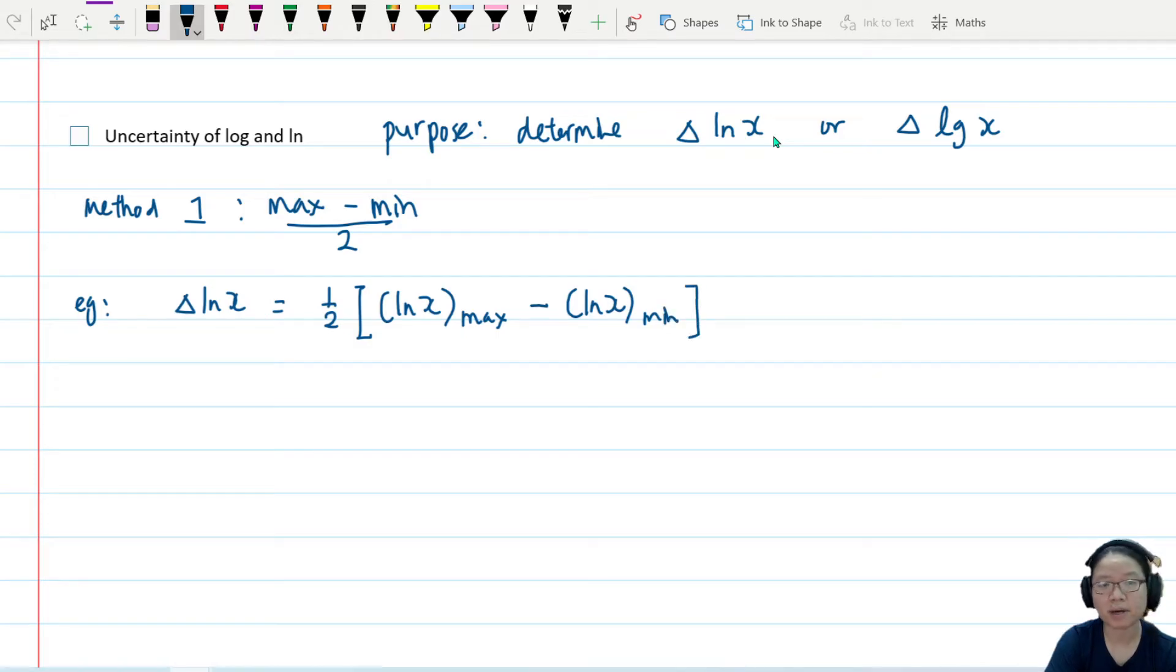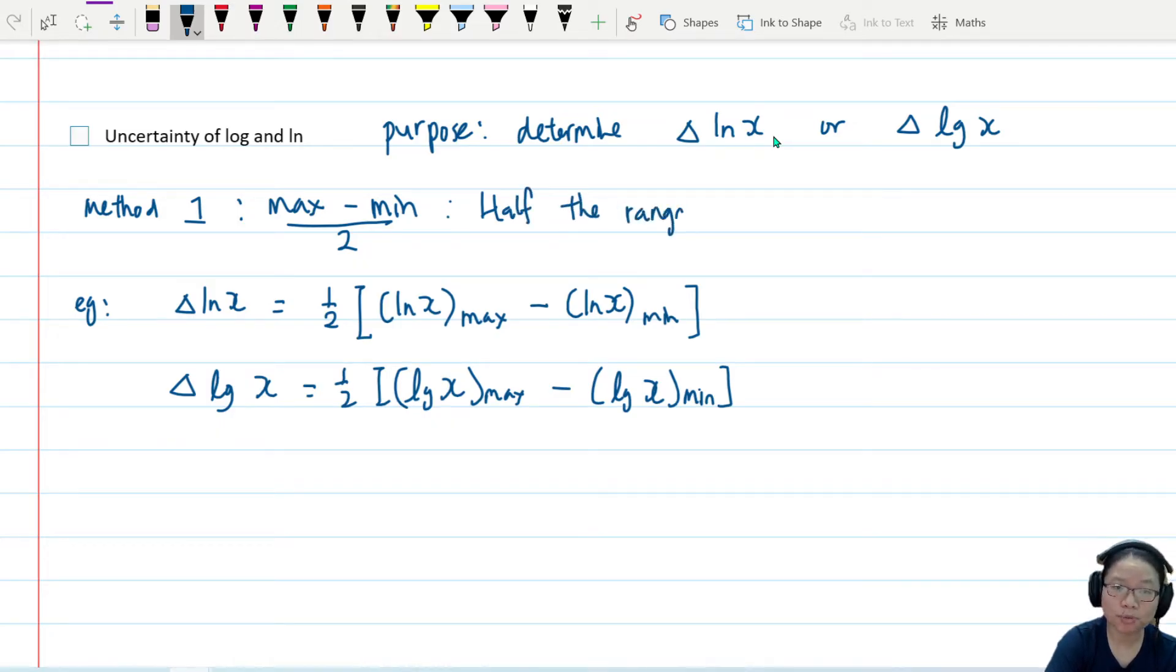Same thing for log. So this log is base 10. So we do the same thing, largest value of log x, find the range. This is also called the half range method, half the range. So if, let's say, you don't remember any identities for uncertainty, fractional uncertainty, percentage uncertainty, you also don't remember already, use half the range. You can always find the maximum and the minimum value.